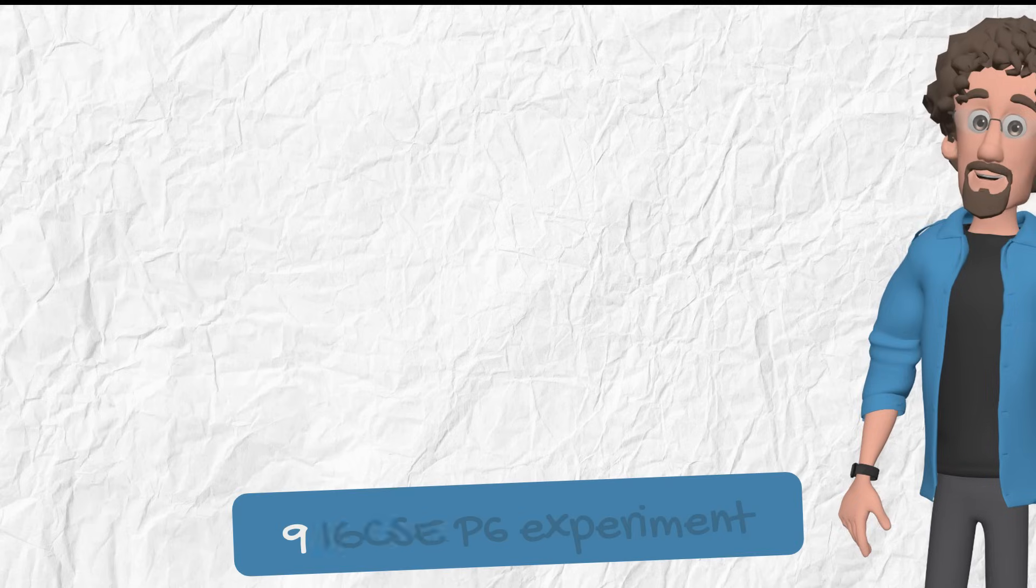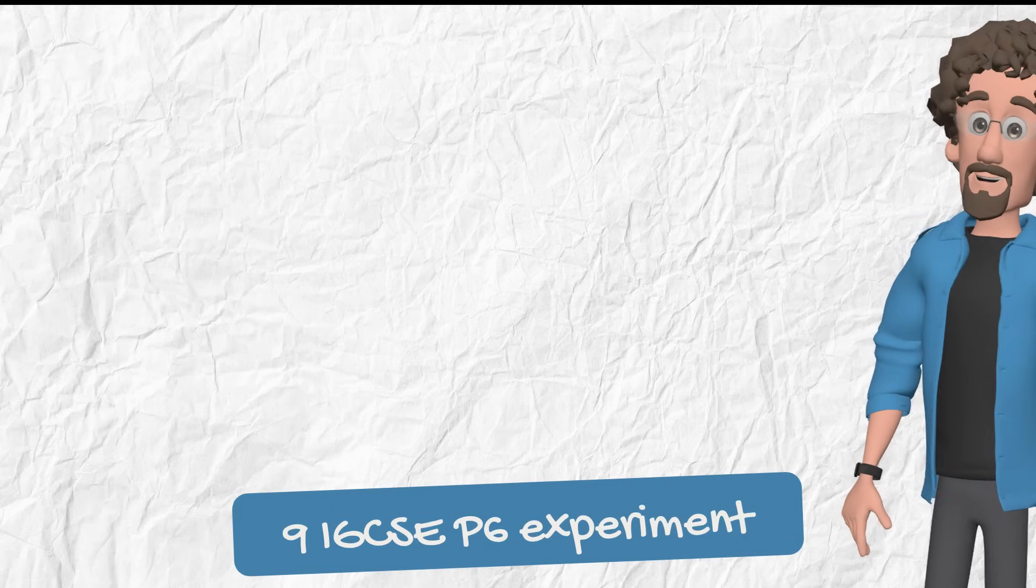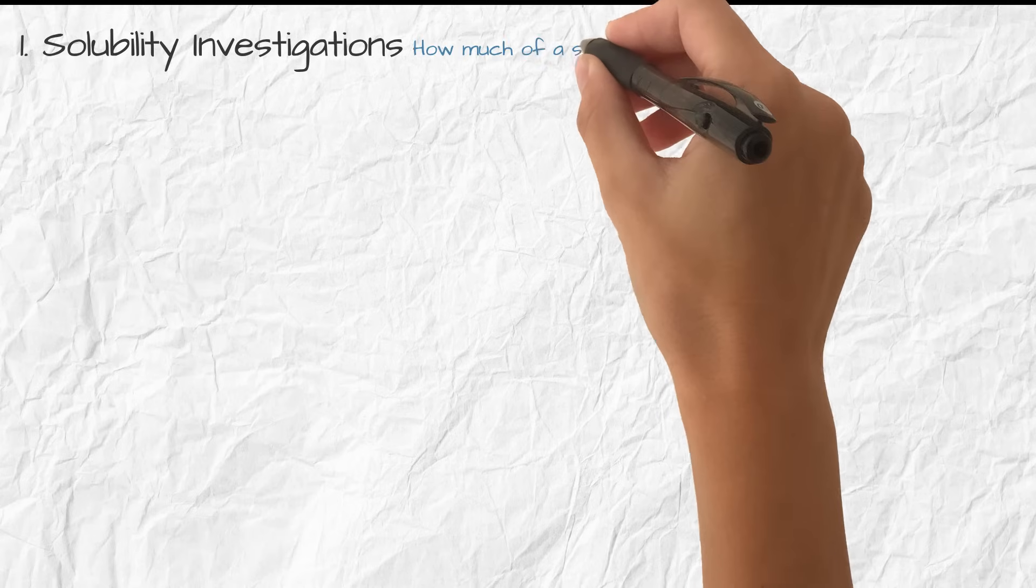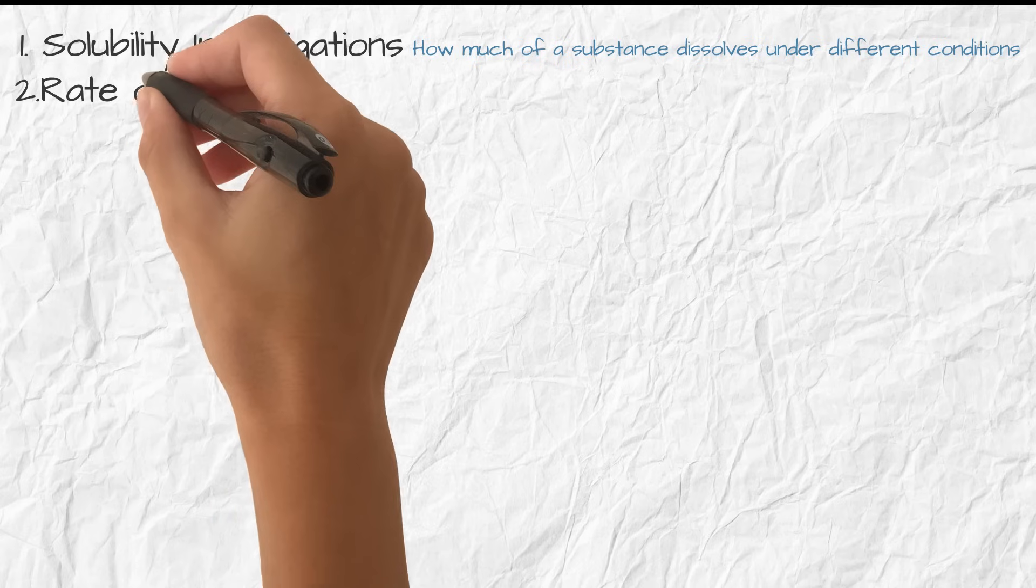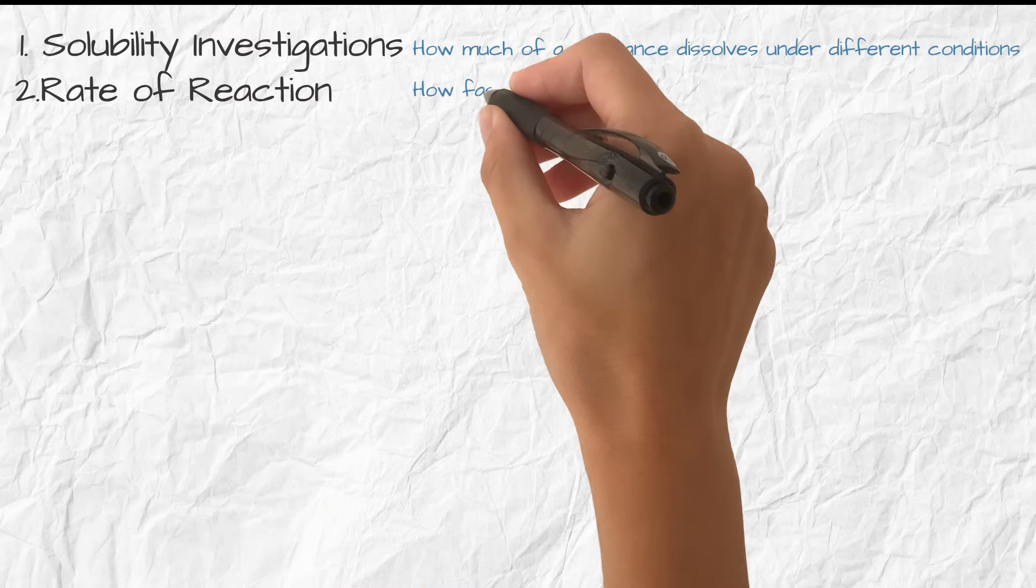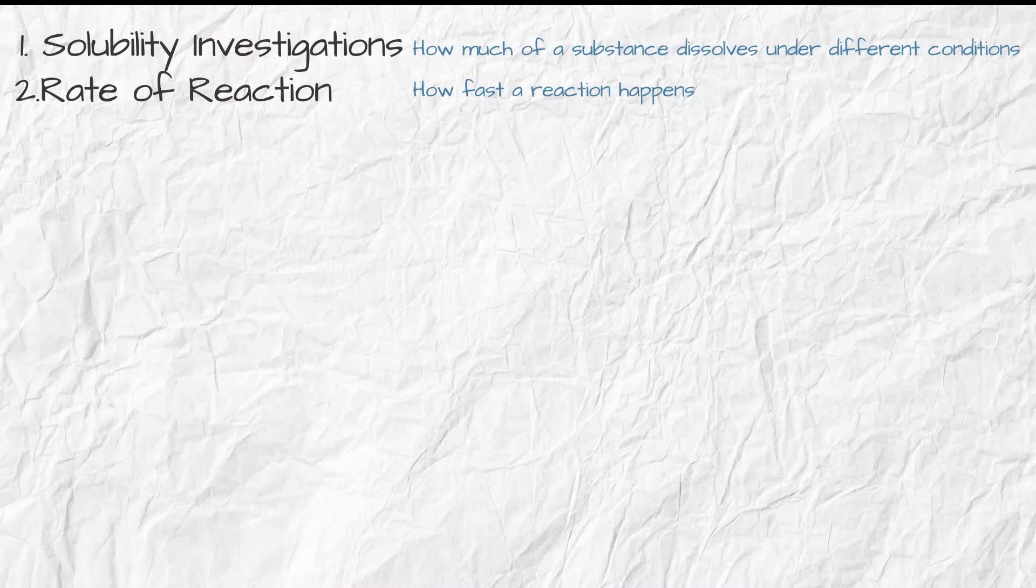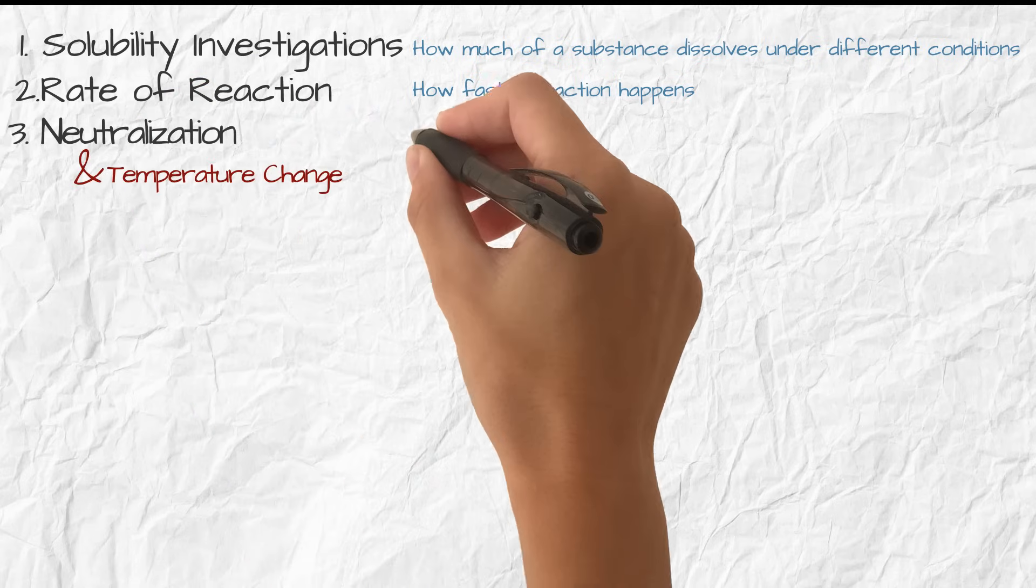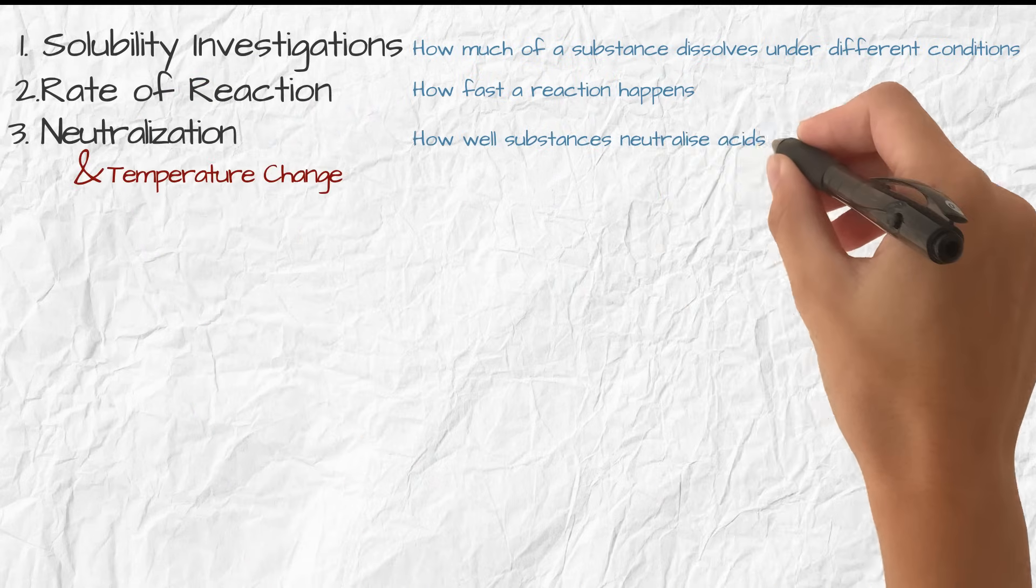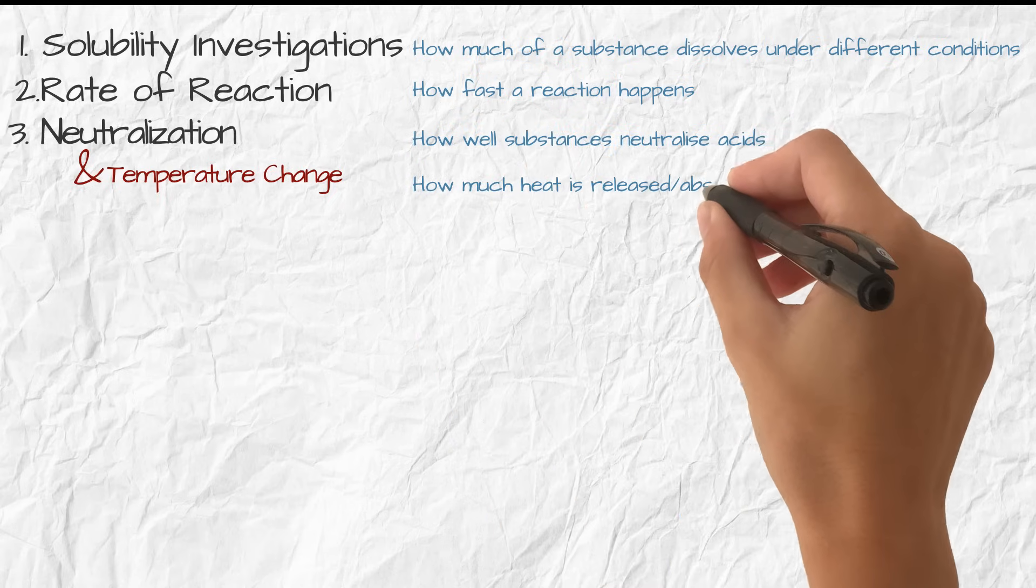Here are your nine IGCSE Paper 6 experiment categories. Number one, solubility investigations, finding how much of a substance dissolves under different conditions. Number two, rate of reaction, measuring how fast a reaction happens. Number three, neutralization and temperature change reactions, compare how well substances neutralize acids, or how much heat is released, absorbed.